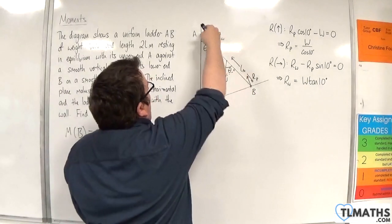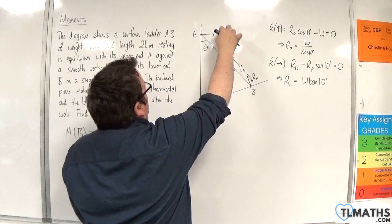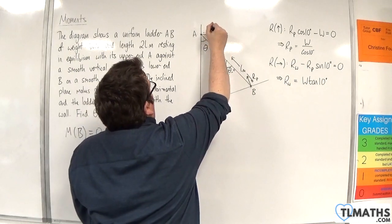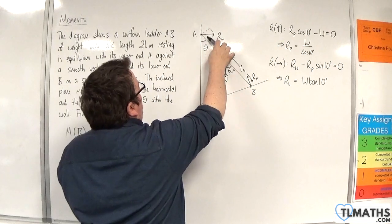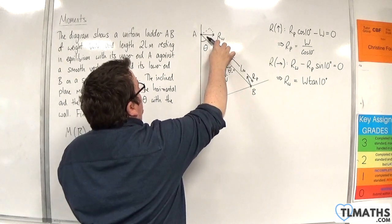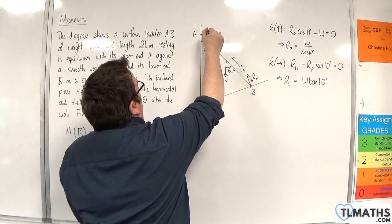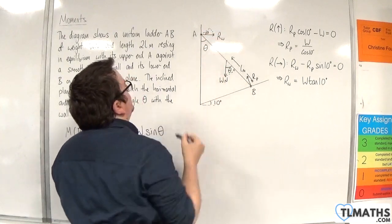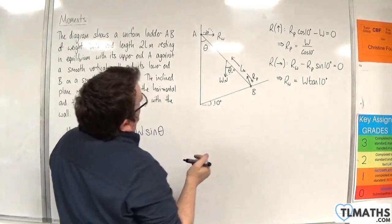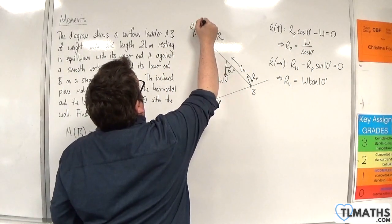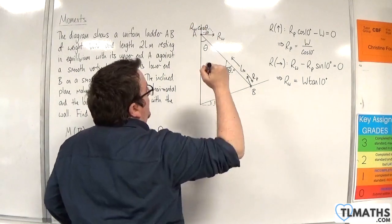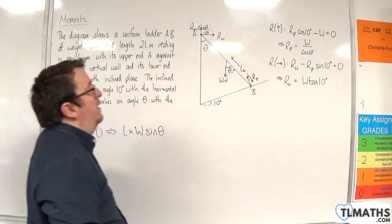Now, we're 2L away from our W force, so let's break that up into its components. Now, if that is angle theta, that is angle 90 minus theta, and so that angle will be theta. So, this bit here will be RW cosine theta. And don't forget, we've already worked out what RW is.